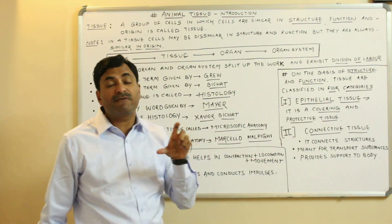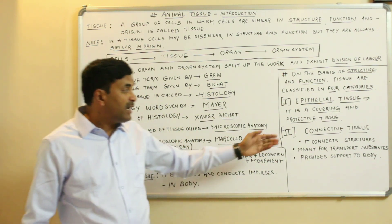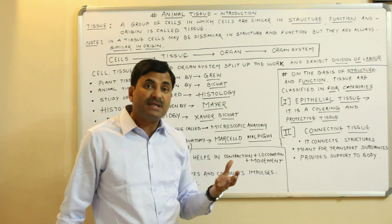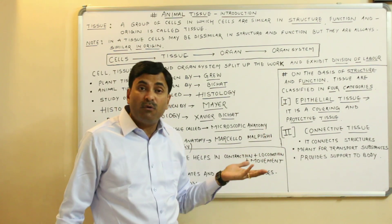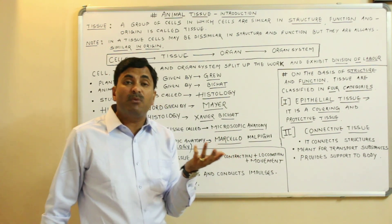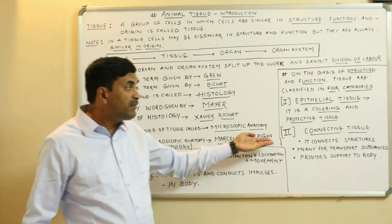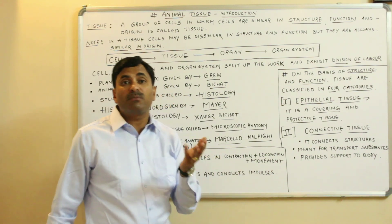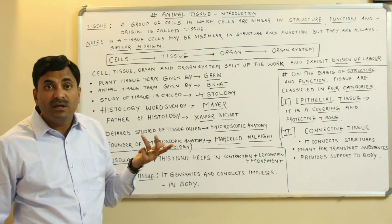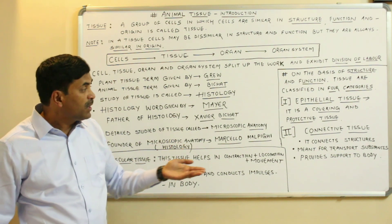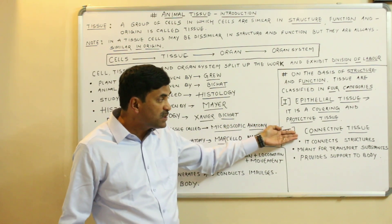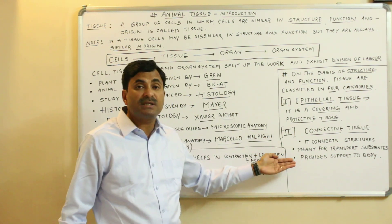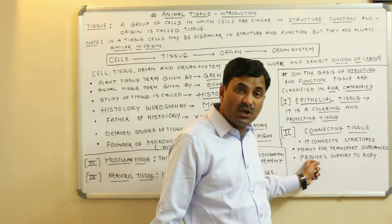Connective tissue is very important in our body. As the name indicates, it connects various structures. It is also meant for transport of substances — for example, blood is a connective tissue. It also provides support to the body — bones and cartilage are part of connective tissue. So connective tissue has three prime roles: connecting structures, transporting substances, and providing support.